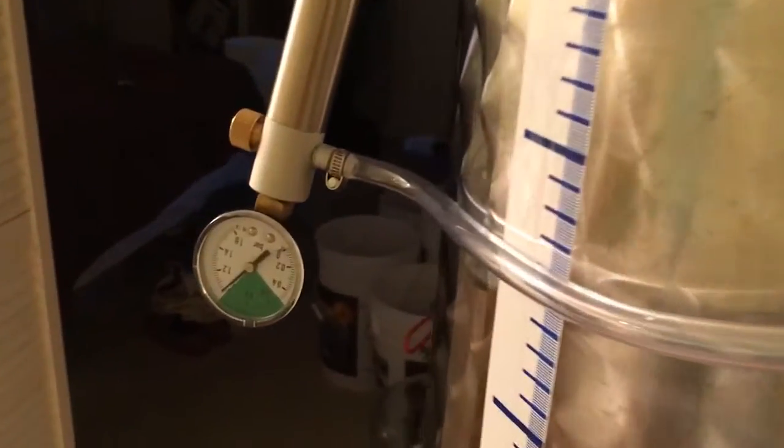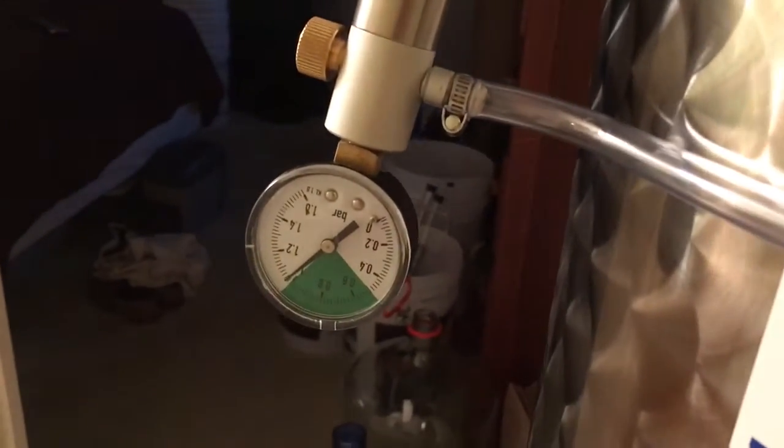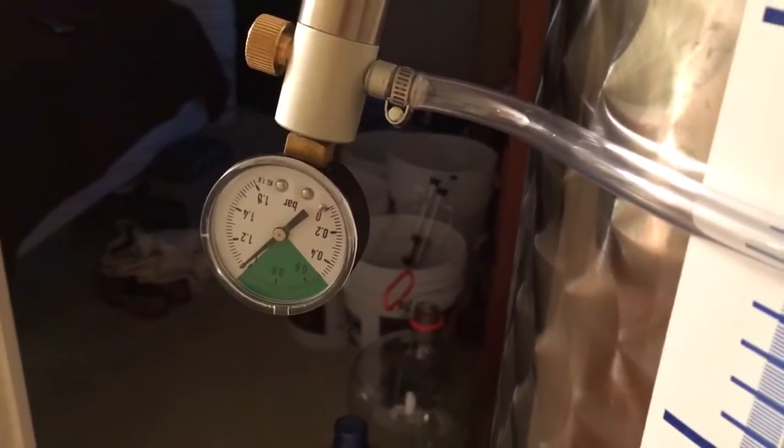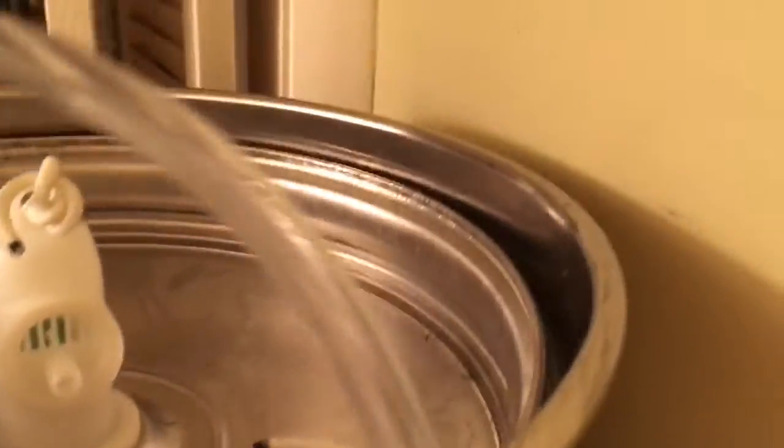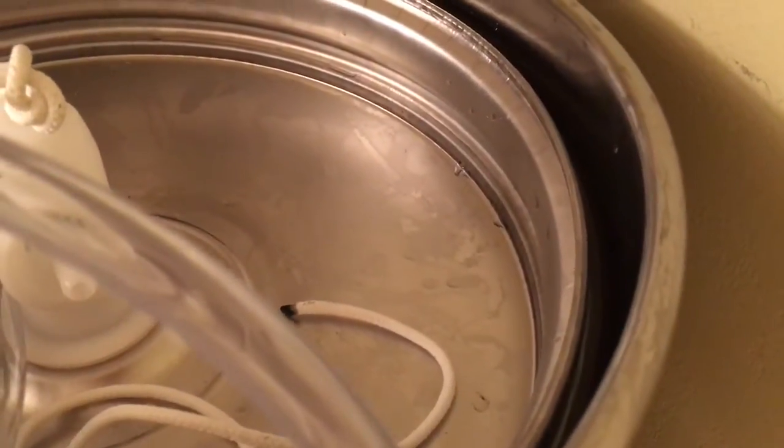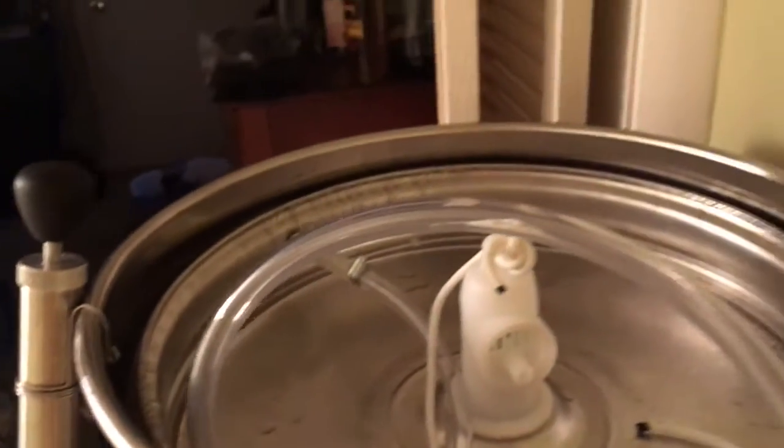And the bladder system is similar to an inner tube. We've got it set to one bar, and basically if you can see down in there, you got a bladder like an inner tube. It's all the way around.